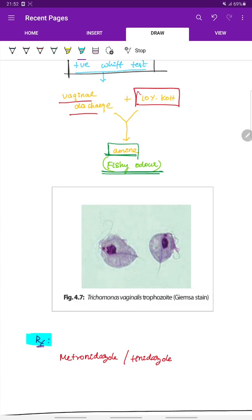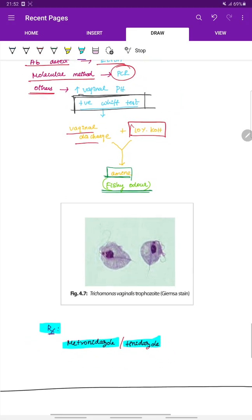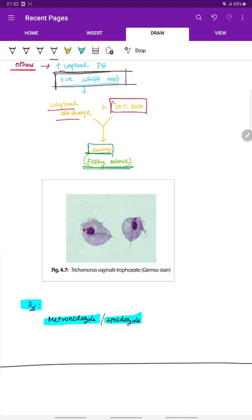Treatment of Trichomonas vaginalis infection is by either metronidazole or tinidazole. This is all about Trichomonas vaginalis.